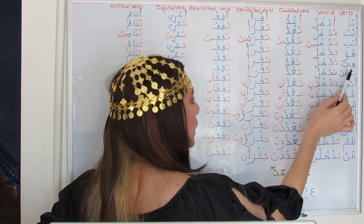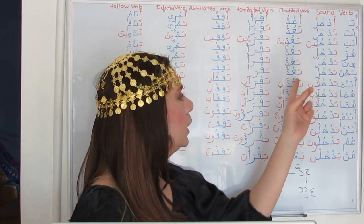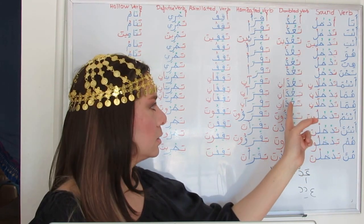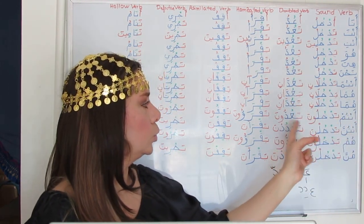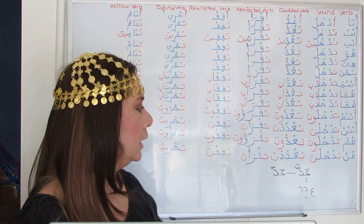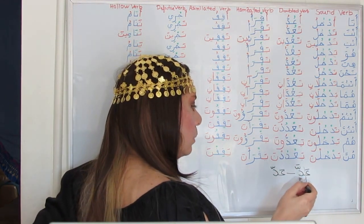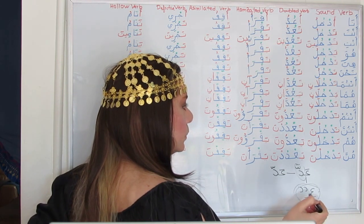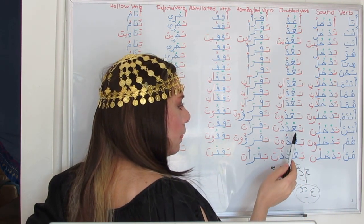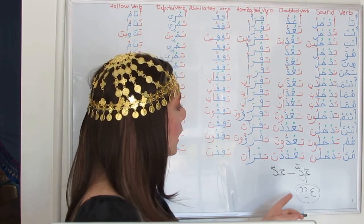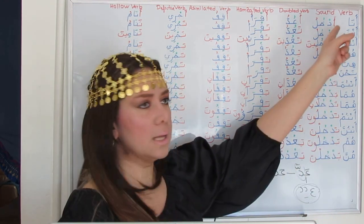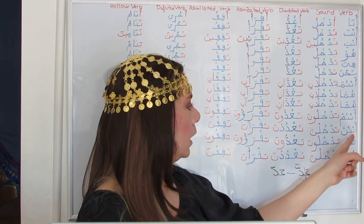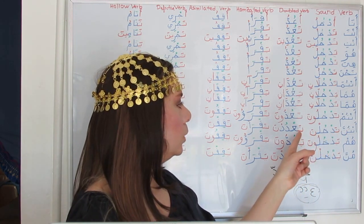Huwa ya'uddu. Hiya ta'uddu. Nahnu na'uddu. Antuma ta'uddani. Huma ya'uddani. Huma ta'uddani. Antum ta'udduuna. Antunna ta'dudna — here we disjoin the doubled consonants and use all three root letters, making it sound like a sound verb. Antunna ta'dudna — like antunna tadkhulna.